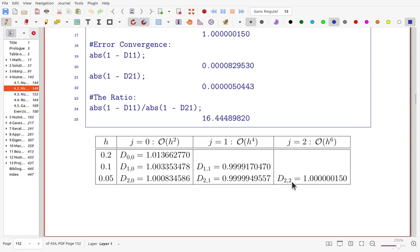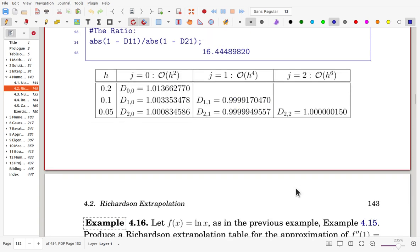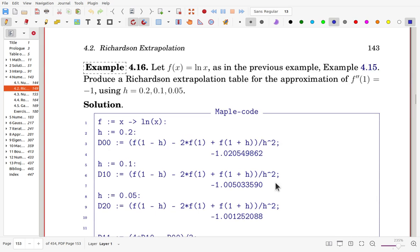Now, as you can see here, the accuracy is really good. So even though we go down only up to 0.05, by using Richardson extrapolation, you can get such a good approximation.